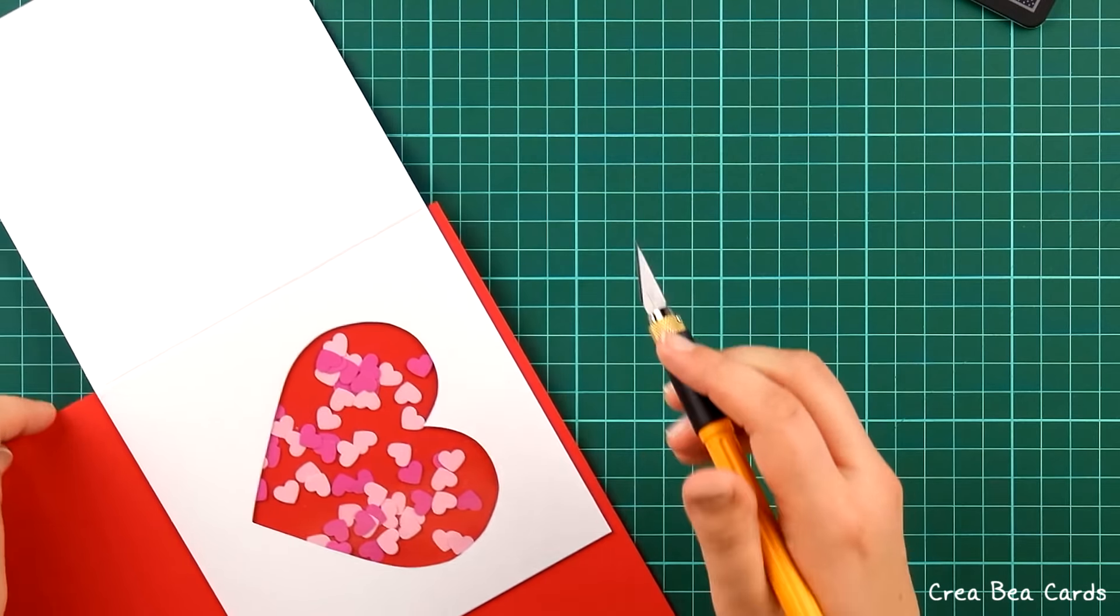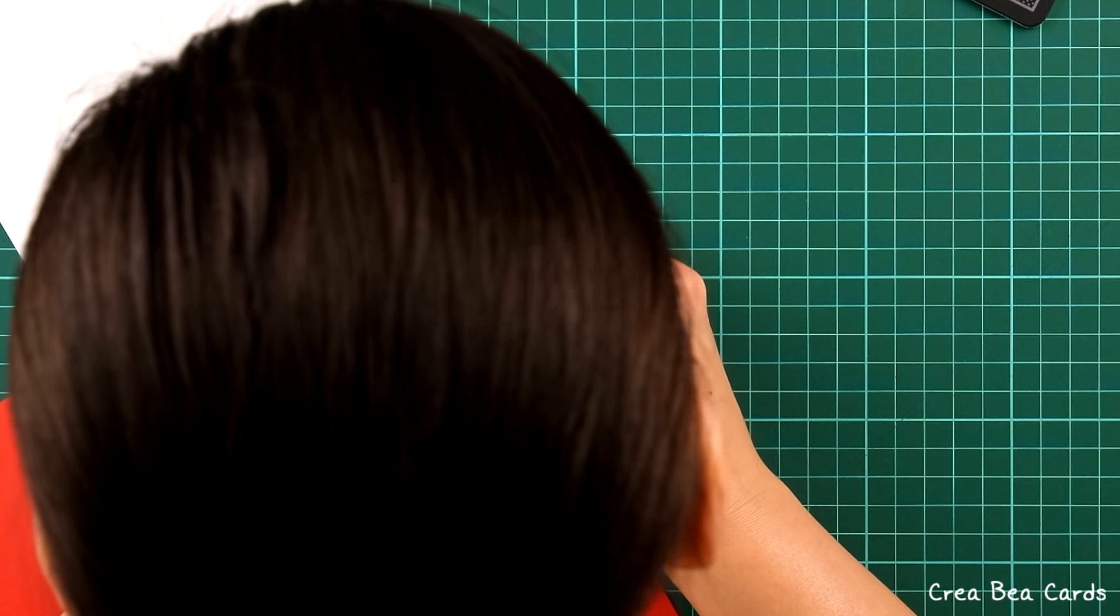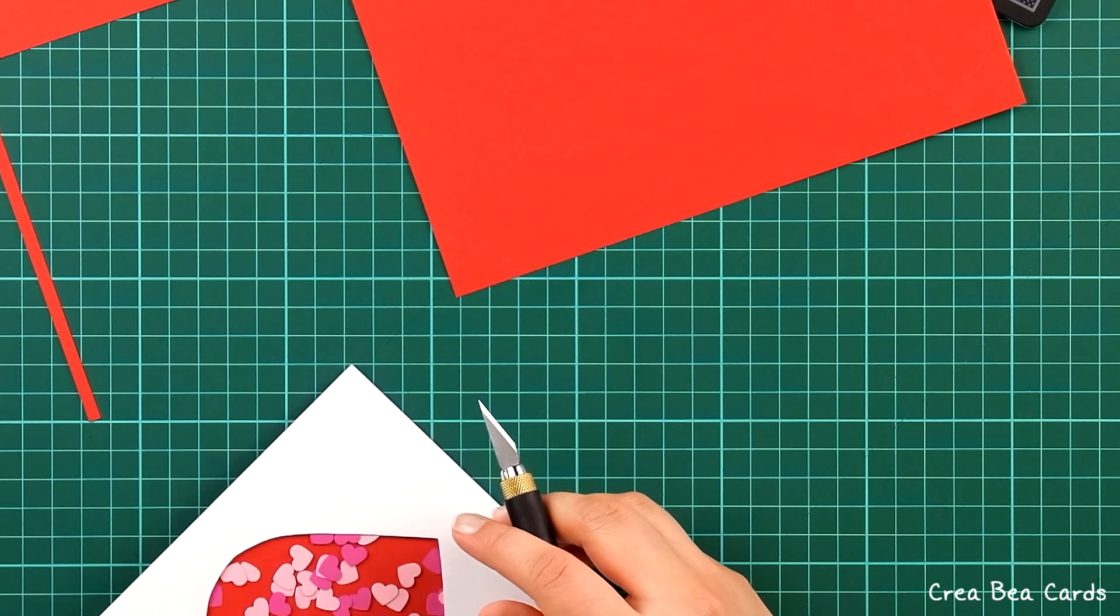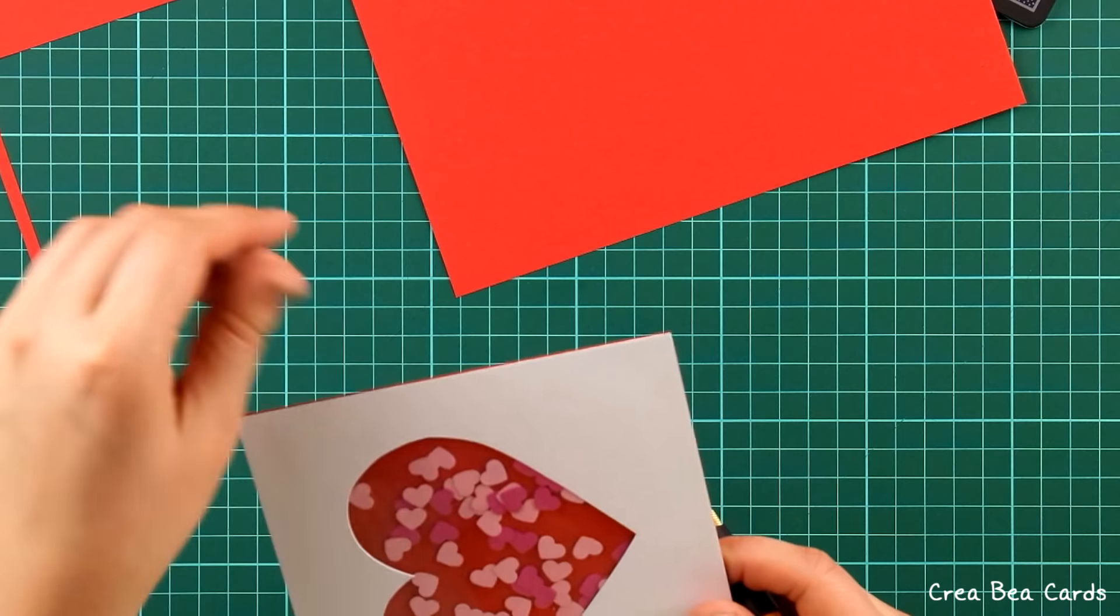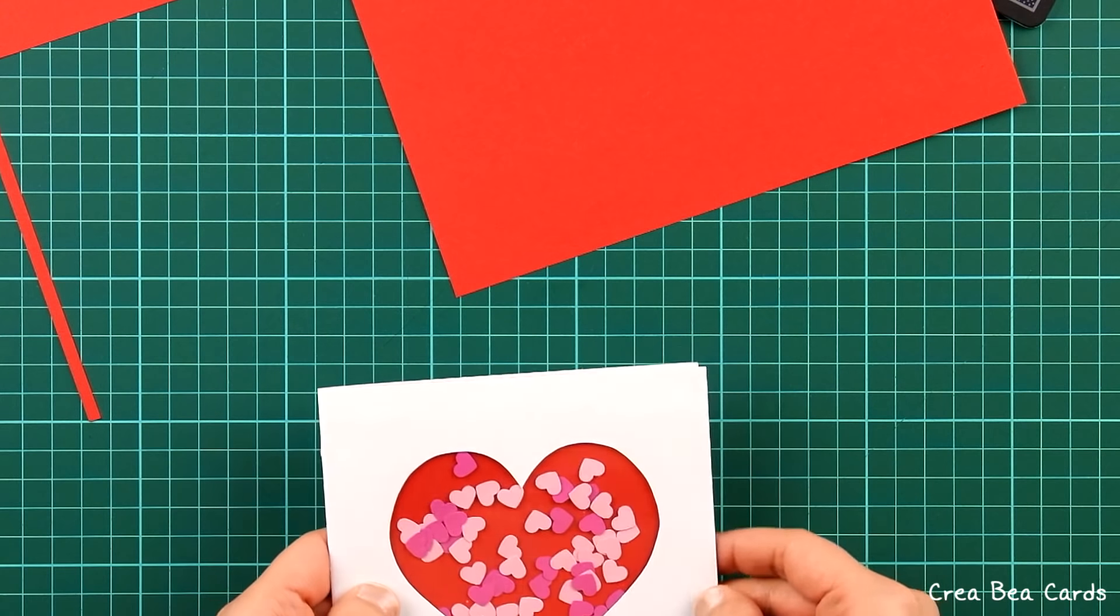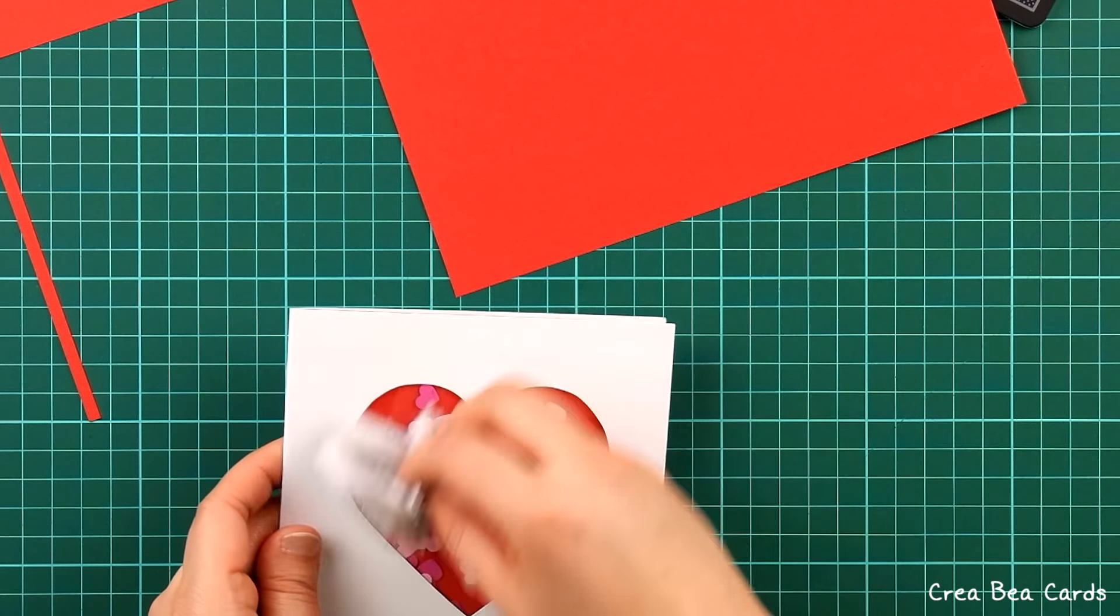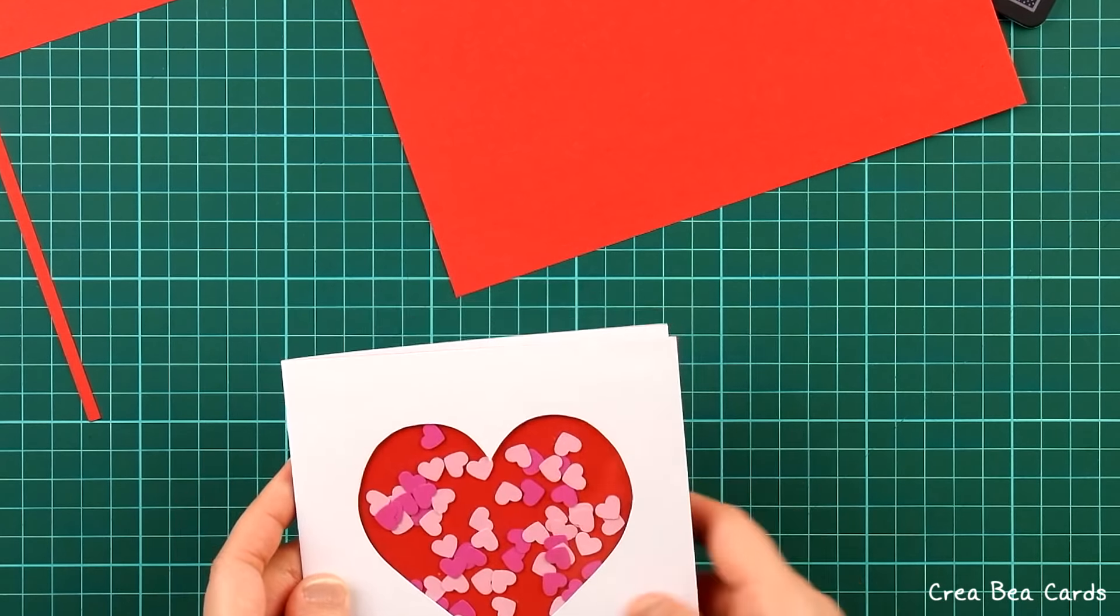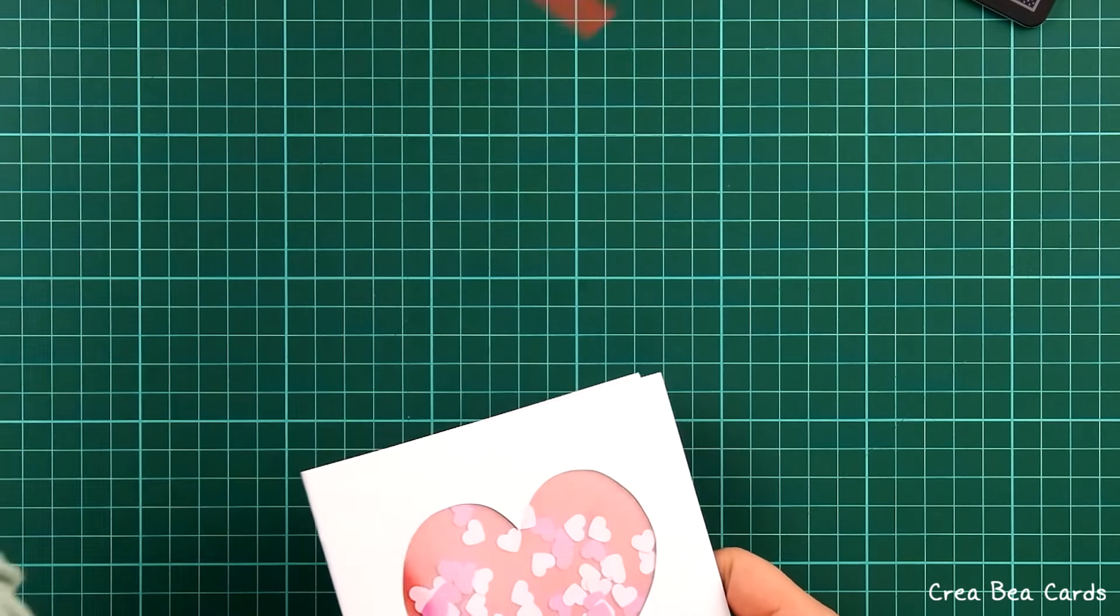Remove the excessive paper with a craft knife or scissors. Just do what works best for you. Remove the foil from the other side of the card.